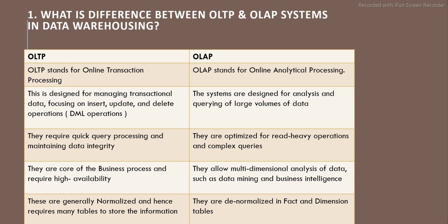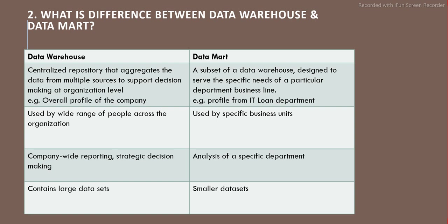For example, let's say there is a bank and there are daily operations happening — deposit, credit, and all those things — those are basically happening on the OLTP system. But when you want to generate some kind of report for management analysis, sales reports, or profit reports, those happen on the OLAP system. They are basically generated out of the data warehouse, and they are used for analysis and decision-making purposes.